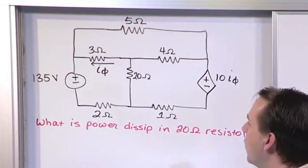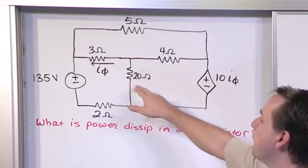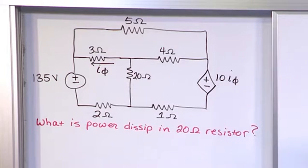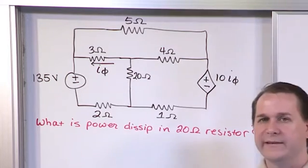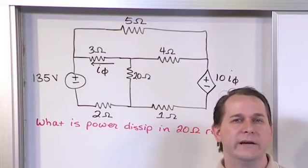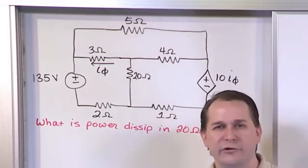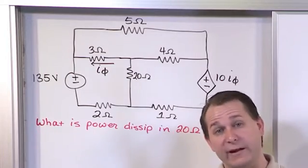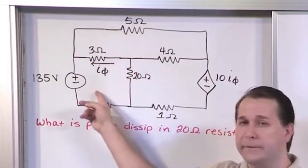The question that we're asked is what is the power dissipated in the 20 ohm resistor, which is the resistor bordering these two meshes here. We're using the mesh current method, so it's the same thing as always. We define our meshes, write our mesh currents down in the circuit, and then write our mesh equations down for each mesh. We should have three of them because there's three meshes here.